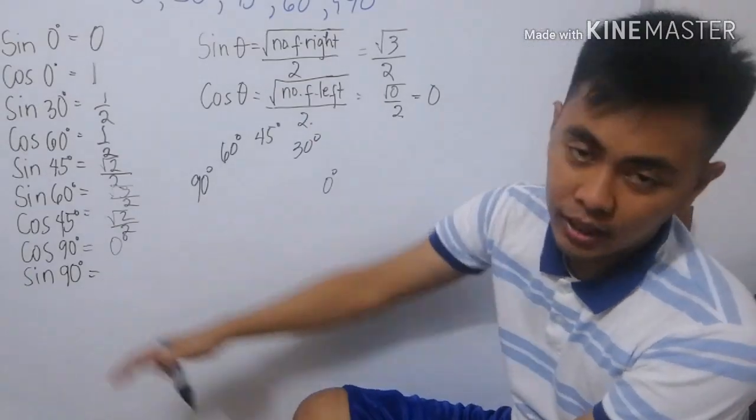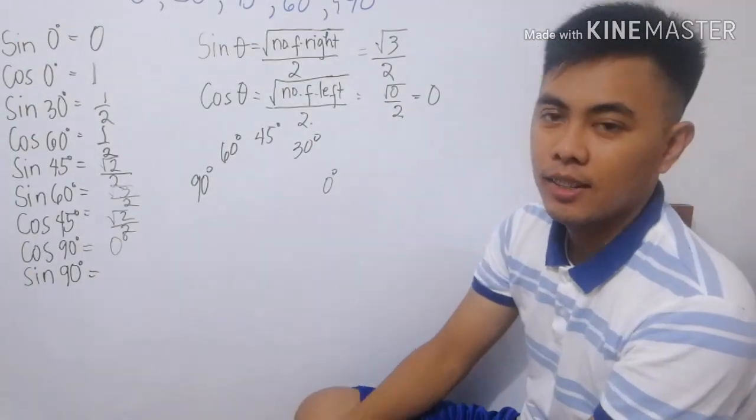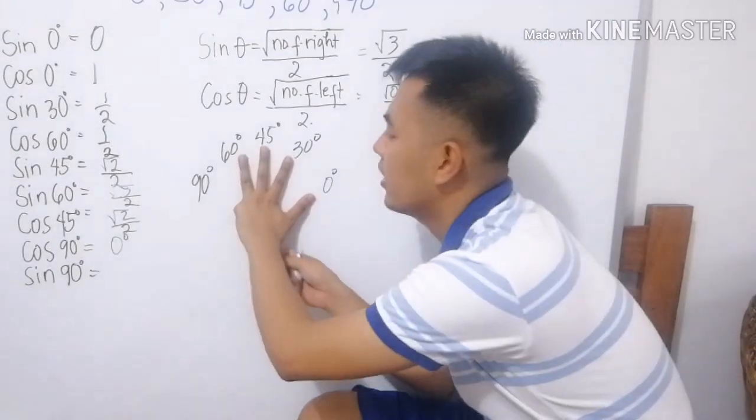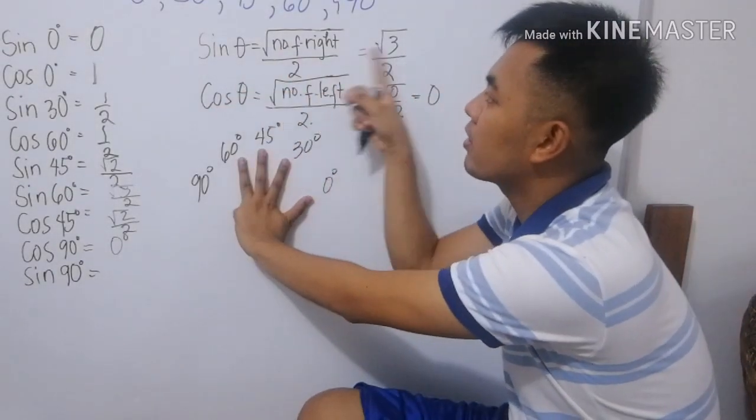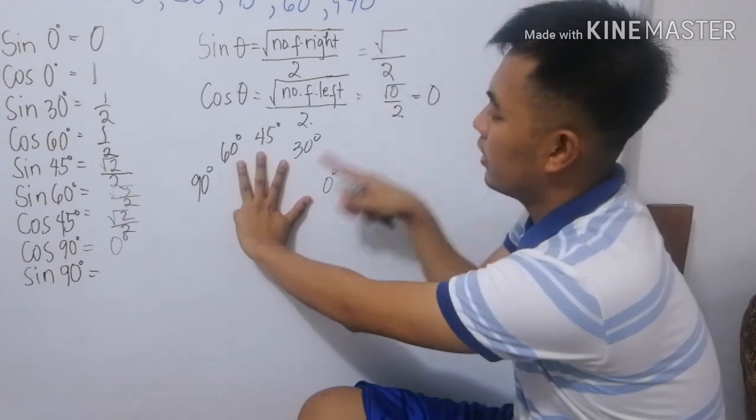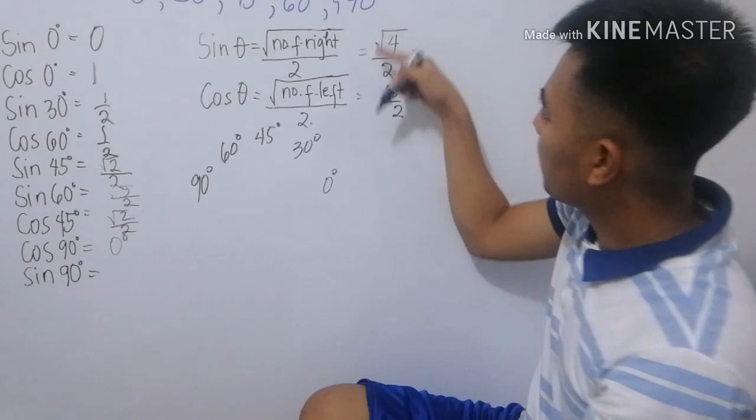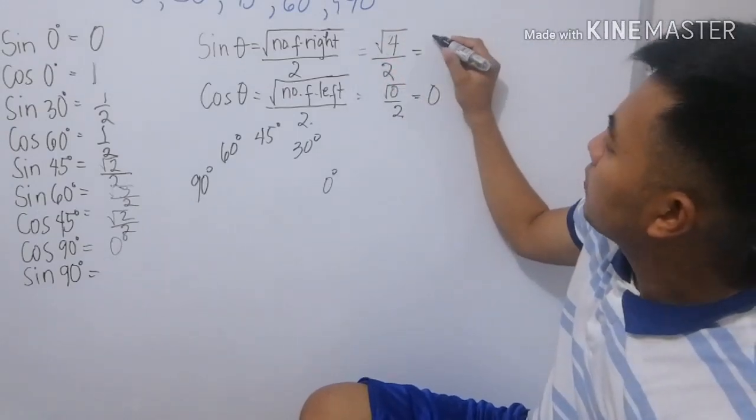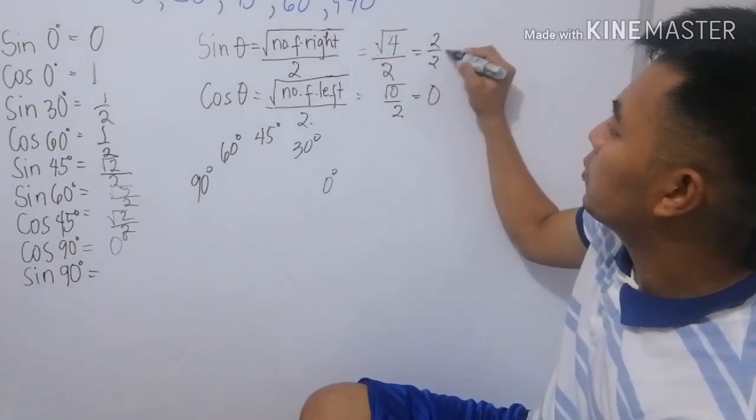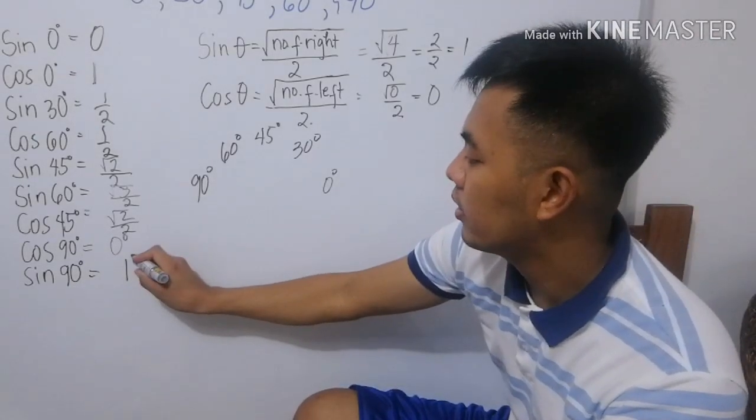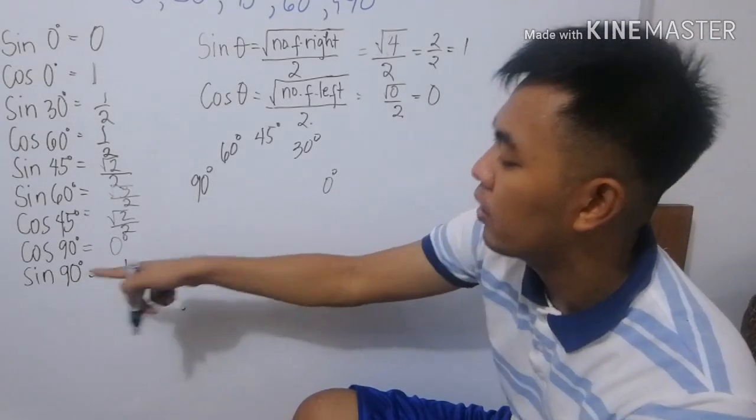And last. Sign 90 degrees. So, tupiin natin si 90 degrees. Sign. Number of fingers to the right. Ilan. 1, 2, 3, 4. Pag simply, square root of 4. So, we have 2 over 2, which is equivalent to 1. Sign 90 is equivalent to 1.